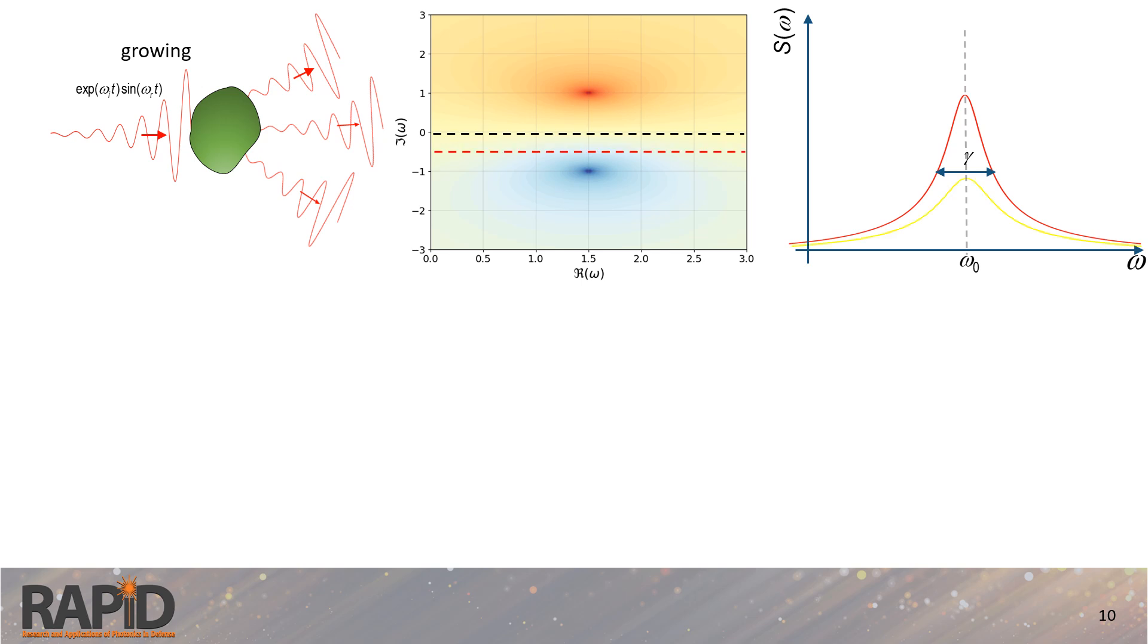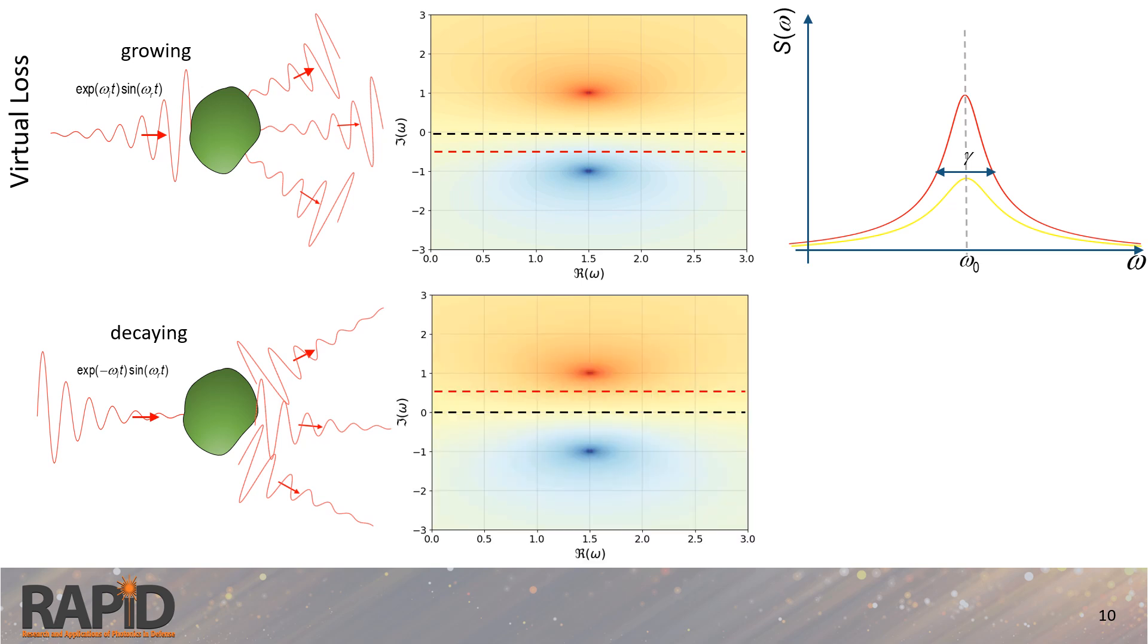On the other hand, if we use an exponentially decaying signal, we move closer to the pole, resulting in a narrower response function with an increased quality factor, the effect that we term virtual gain. This occurs because the excitation field decays faster than the system radiation field.